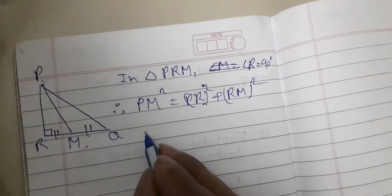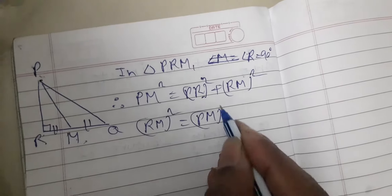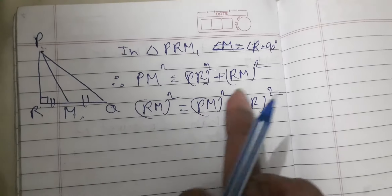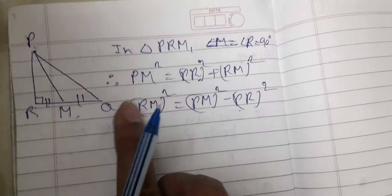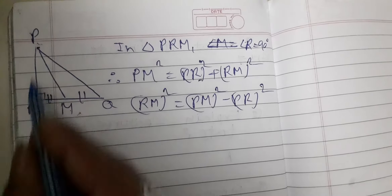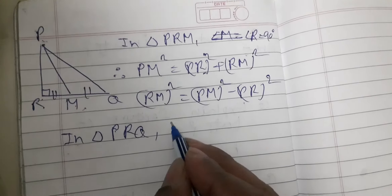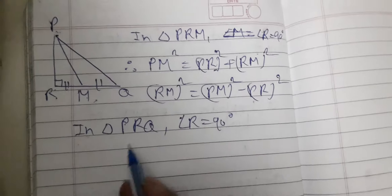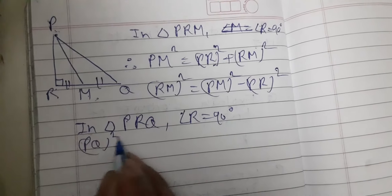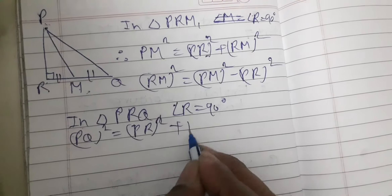Now, if we shift the RM square, RM square is equal to PM square minus PR square. Then, in triangle PRQ, angle R is 90 degrees. By Pythagoras theorem: PQ square is equal to PR square plus RQ square.